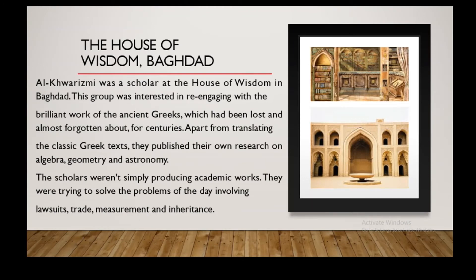Al-Kharizmi was a scholar at the House of Wisdom in Baghdad. This group was interested in re-engaging with the brilliant work of the ancient Greeks, which had been lost and almost forgotten about for centuries. Apart from translating the classic Greek texts, they published their own research on algebra, geometry, and astronomy. The scholars weren't simply producing academic works — they were trying to solve the problems of the day involving lawsuits, trade, measurement, and inheritance.